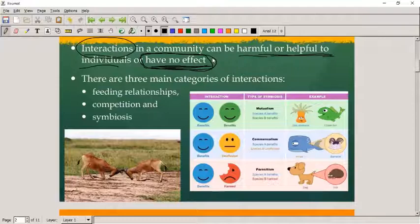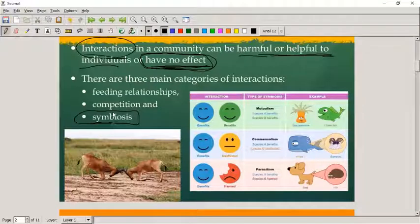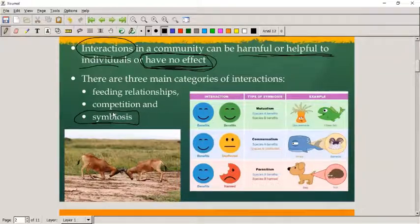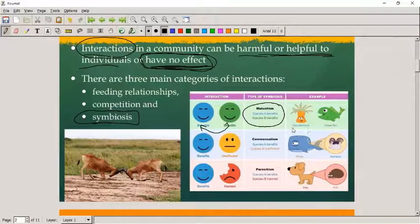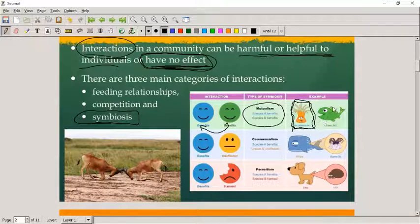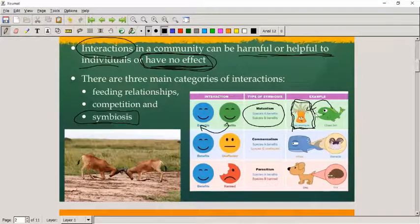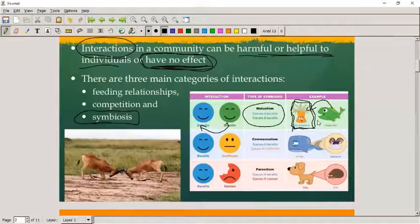When we talk about symbiosis, there are three different types. We get mutualism where both parties benefit. A typical example is a sea anemone and the clownfish. The clownfish brings food to the anemone, and the anemone gives protection to the clownfish.